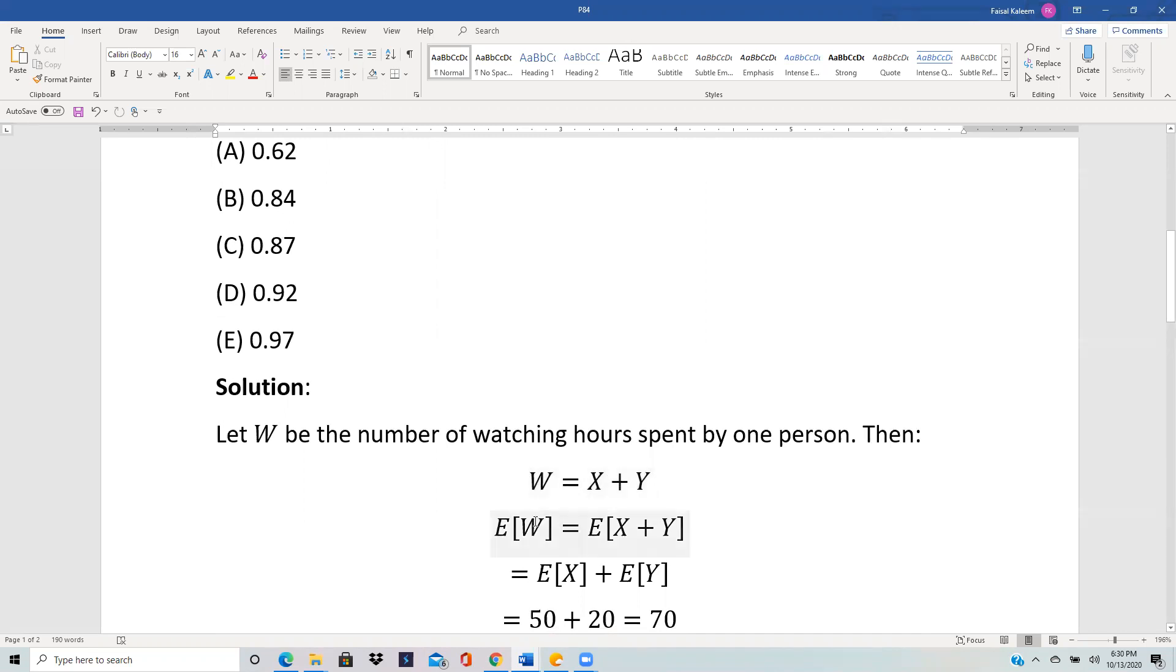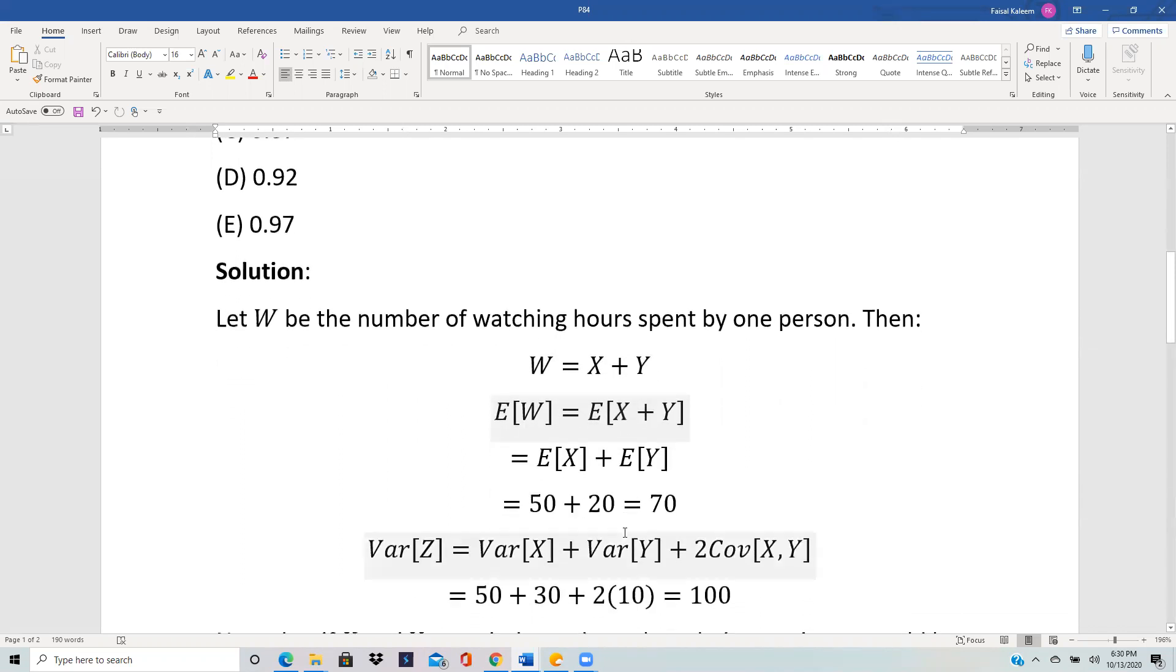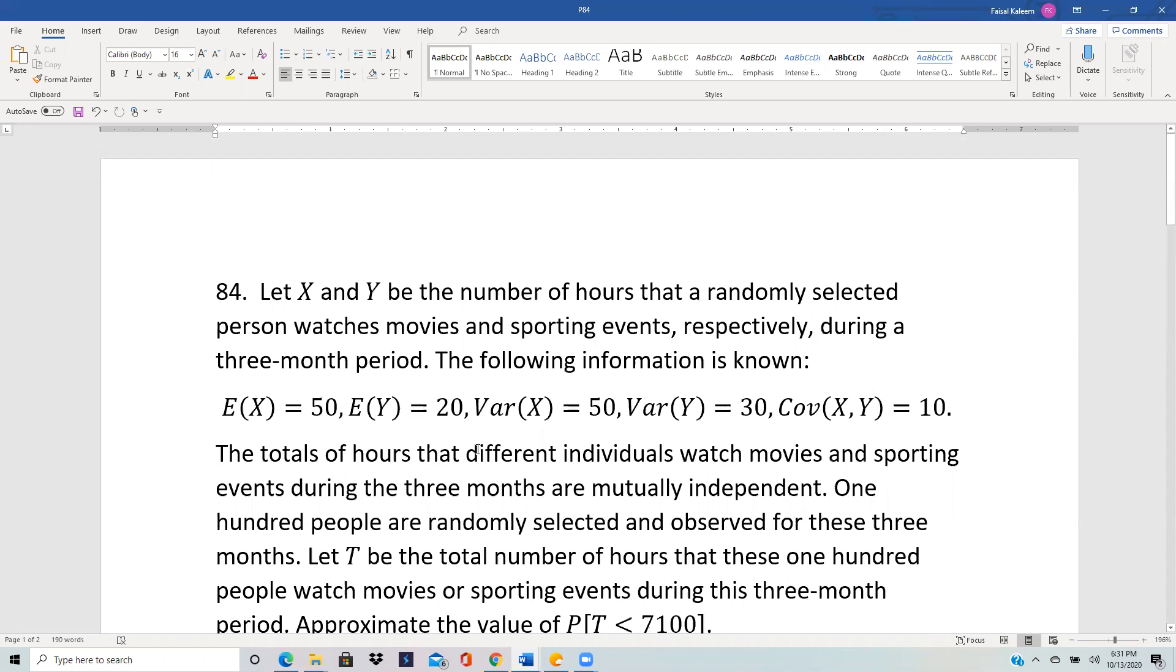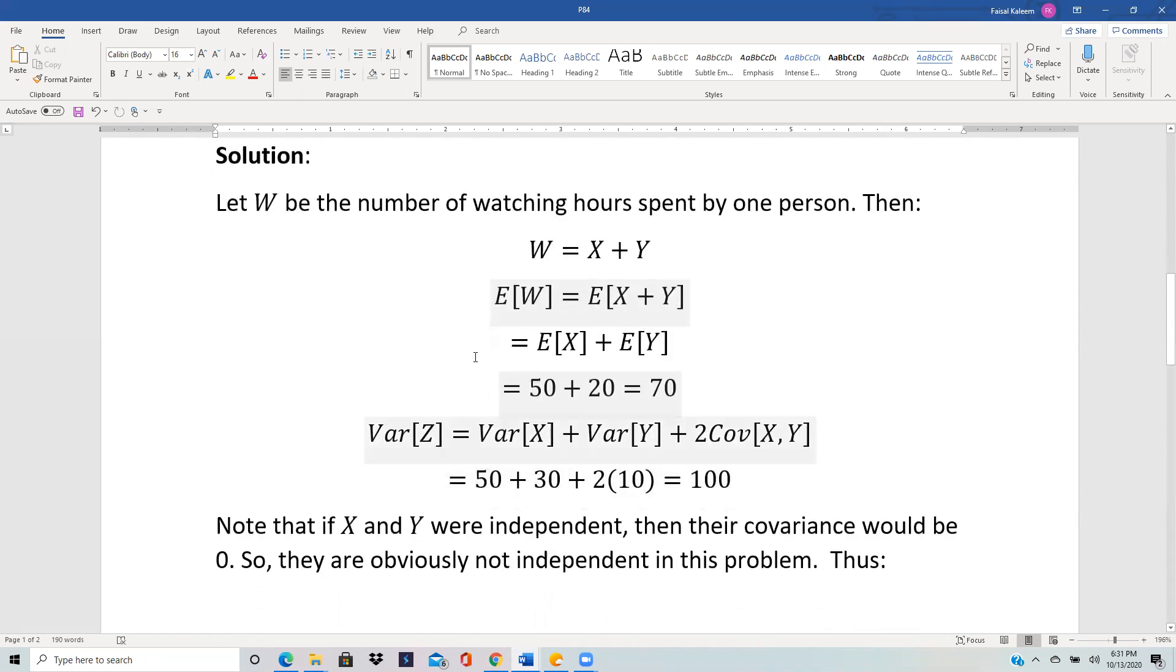Expected value of W is expected value of X plus Y, and that's equal to E[X] plus E[Y]. That's how you can break up expected value for a sum. E[X] is 50, E[Y] is 20, those were the given values. So we get expected value of W to be 70.